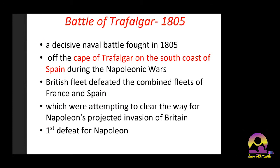Britain during that time had the world's superior navy — they were an island country surrounded by water on all sides, very well experienced in naval warfare. So in a naval battle against Britain, others had a high chance of being defeated. The British fleet defeated the combined fleets of France and Spain — Spain was accompanying France. This was the first defeat of Napoleon at the Battle of Trafalgar in 1805.